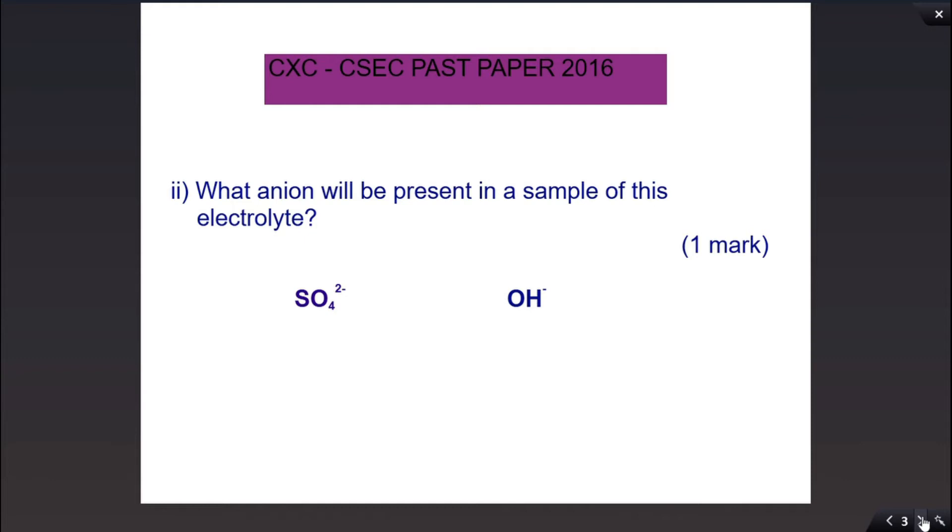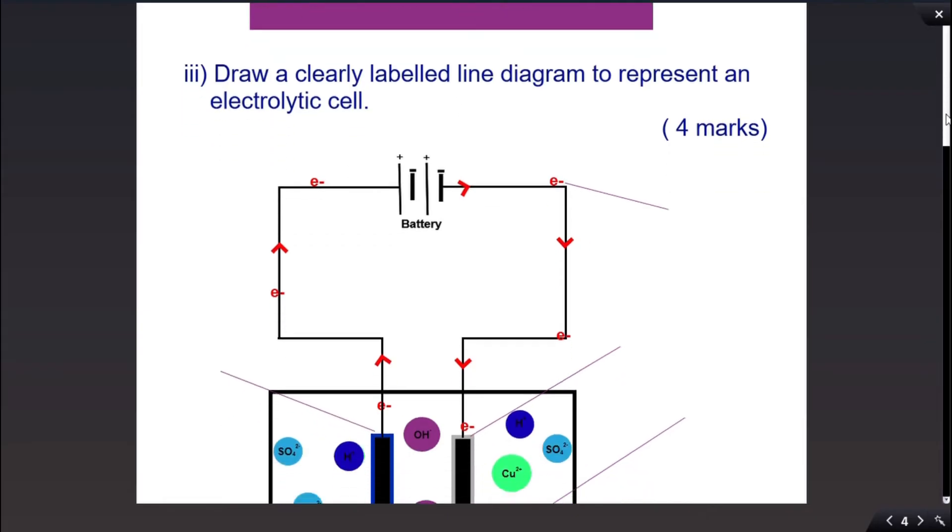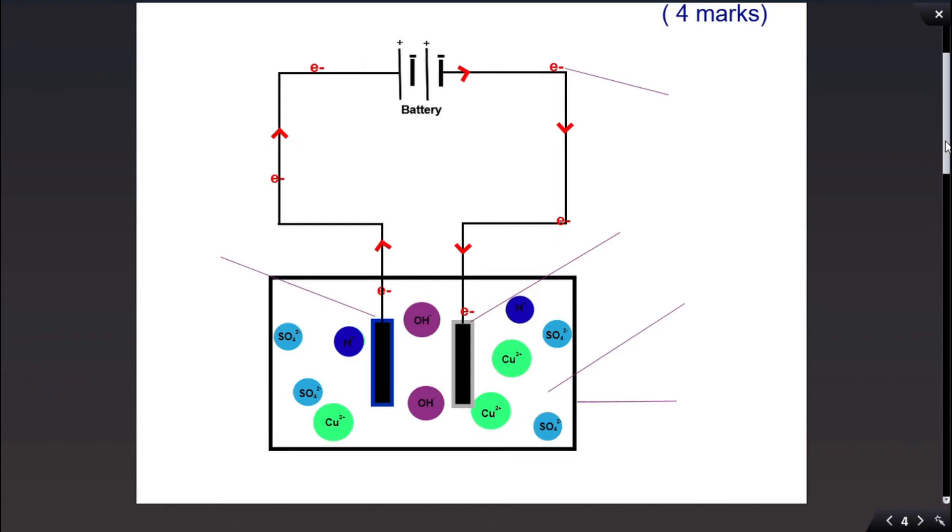Let us look at part three of the question. Draw a clearly labeled line diagram to represent an electrolytic cell. It is given as so. Let us add the labels. Here is the anode, the cathode, the electrolytic solution of copper sulfate for example, the beaker that holds the chemical reaction.